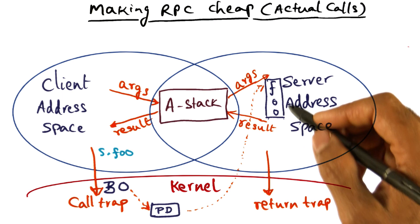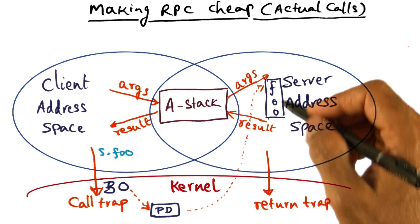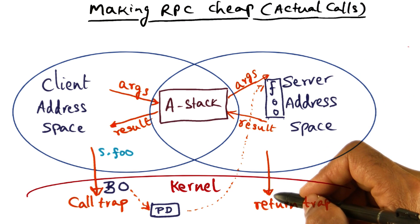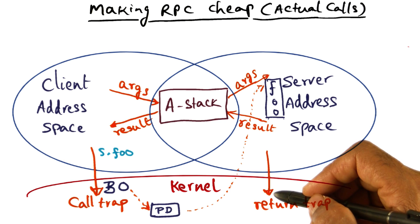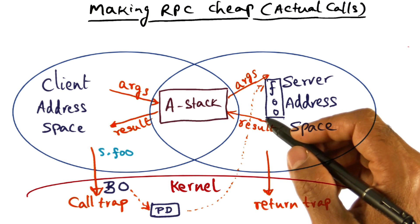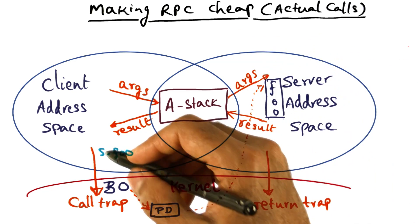Finally, when the server procedure is done executing, the return trap — that's the third explicit cost. So there are three explicit costs associated with the actual call.